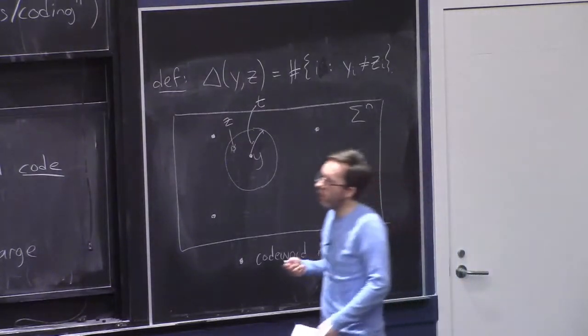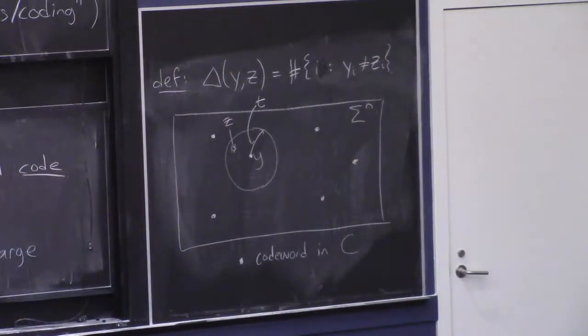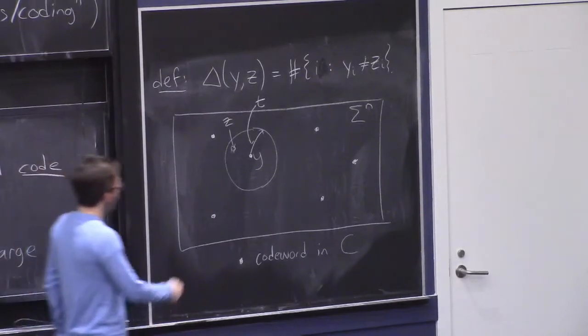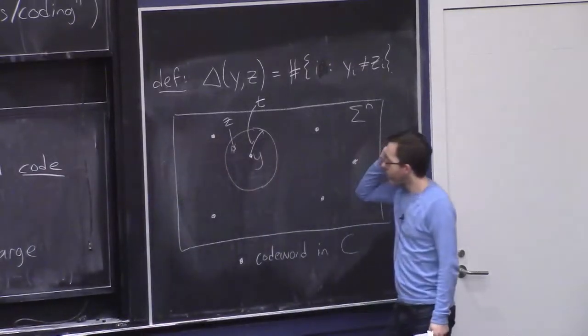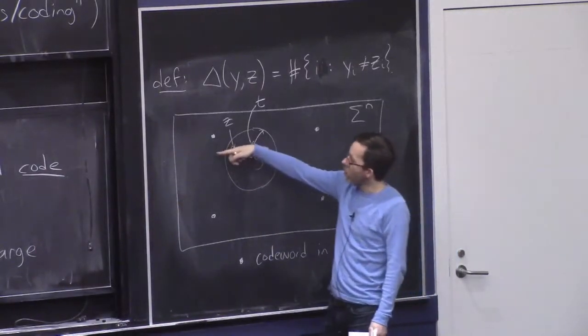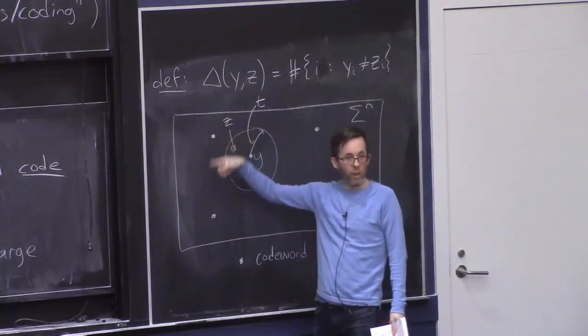And now in principle, we may ask ourselves, could a receiver figure out what the intended message was? In other words, figure out what the originally transmitted codeword Y was. You see, this can happen as long as this Z is not within distance T of a different codeword.